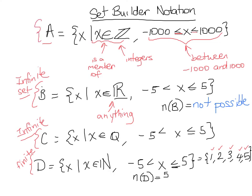And even though A was a humongous set from negative 1,000 to 1,000, they were integers. So even though it would take a very, very long time to list it, it could still be listed. So set A is also finite.